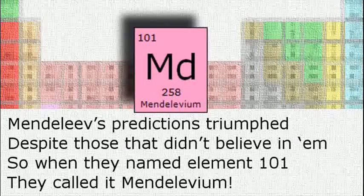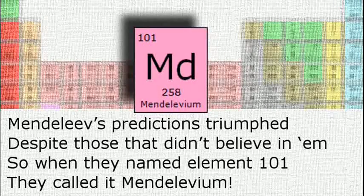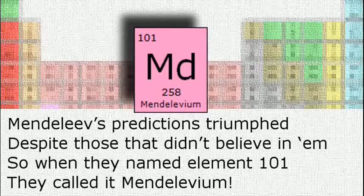Mendeleev's predictions triumphed, despite those that didn't believe in them. So when they named element 101, they called it Mendelevium.